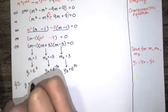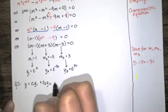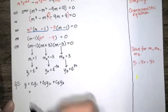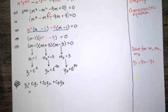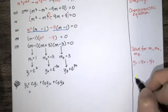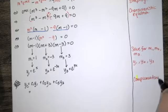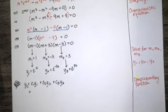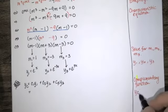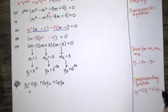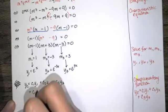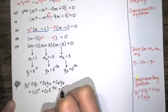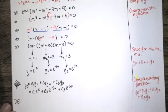The general solution would be y equals c1 y1 plus c2 y2 plus c3 y3 for a third order equation. But this is not the general solution — this is the solution to the corresponding homogeneous equation, the complementary function or complementary solution. We are solving a non-homogeneous differential equation after all, so we fill in y1, y2, and y3 here.